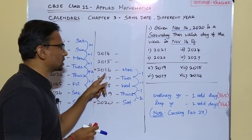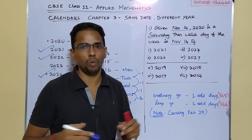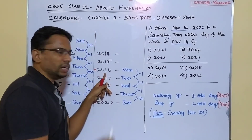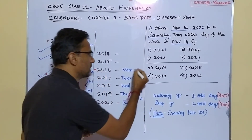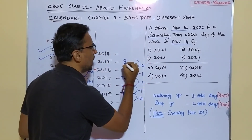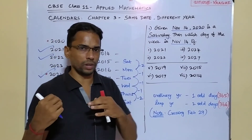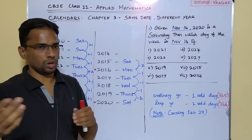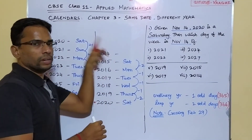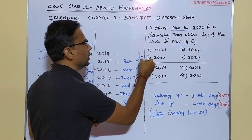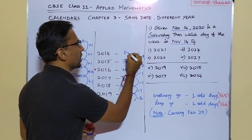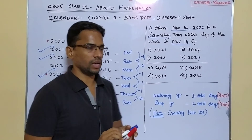From 2016 November to 2015 November, moving in reverse we cross February 29 of 2016, since 2016 is a leap year. That means two odd days in the reverse direction — Monday minus two: Monday, Sunday, Saturday. So 2015 November 14 is a Saturday. Then from 2015 to 2014, it is only one odd day — Saturday minus one is Friday. So 2014 November 14 is a Friday.